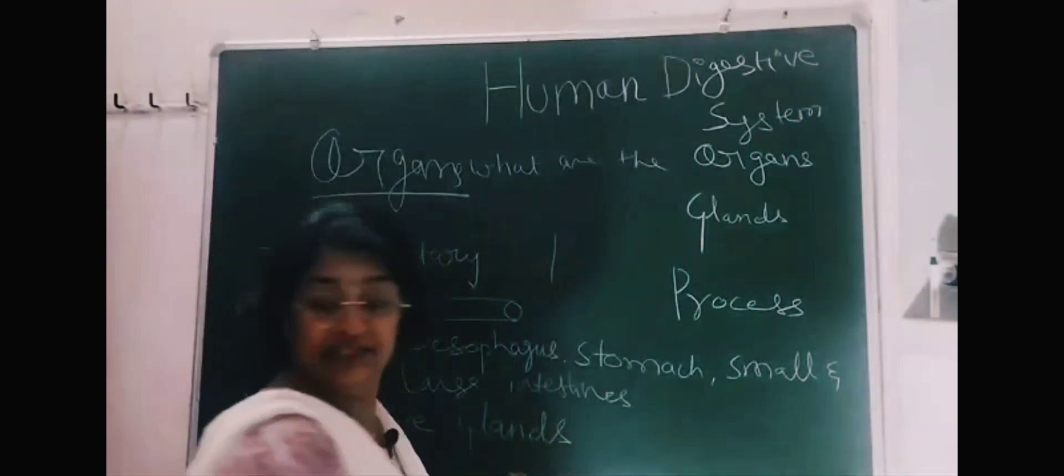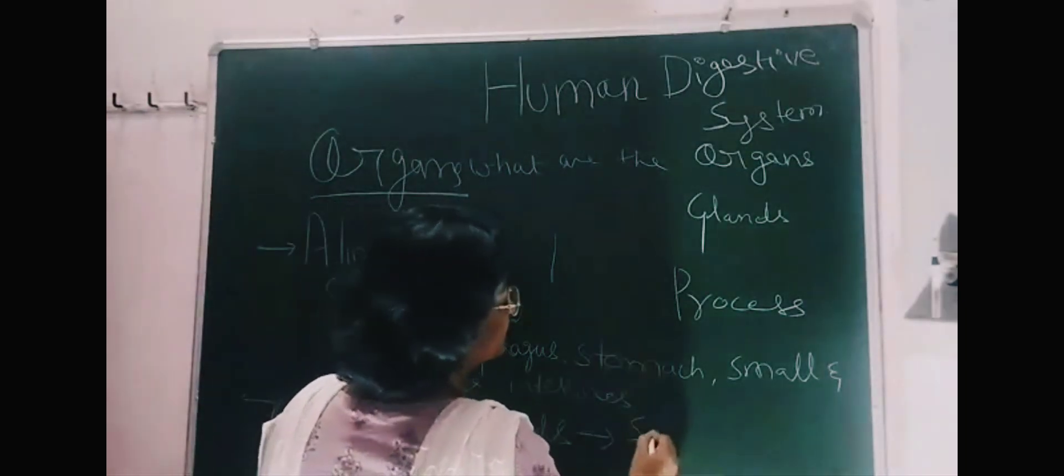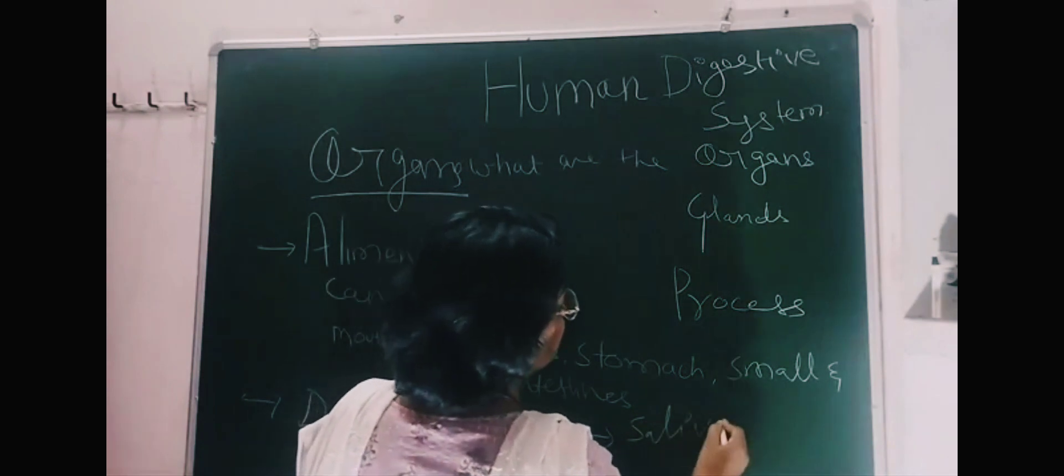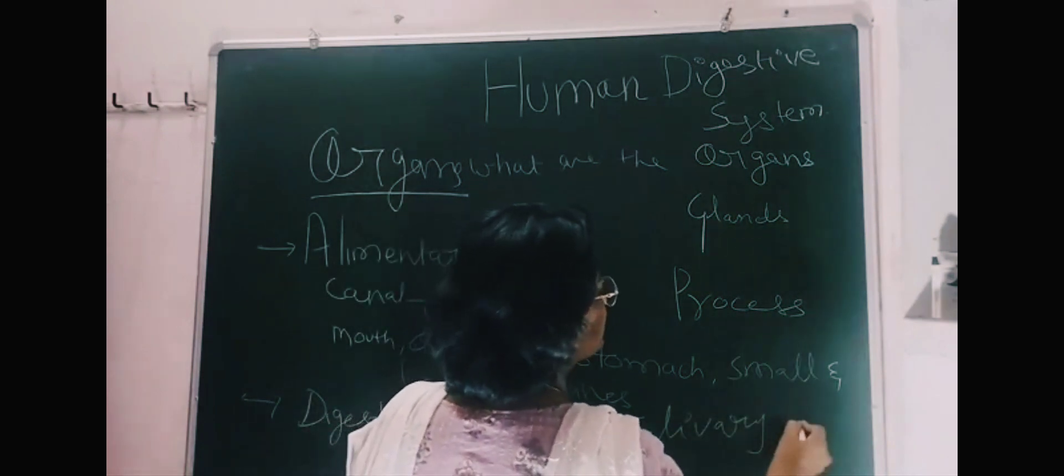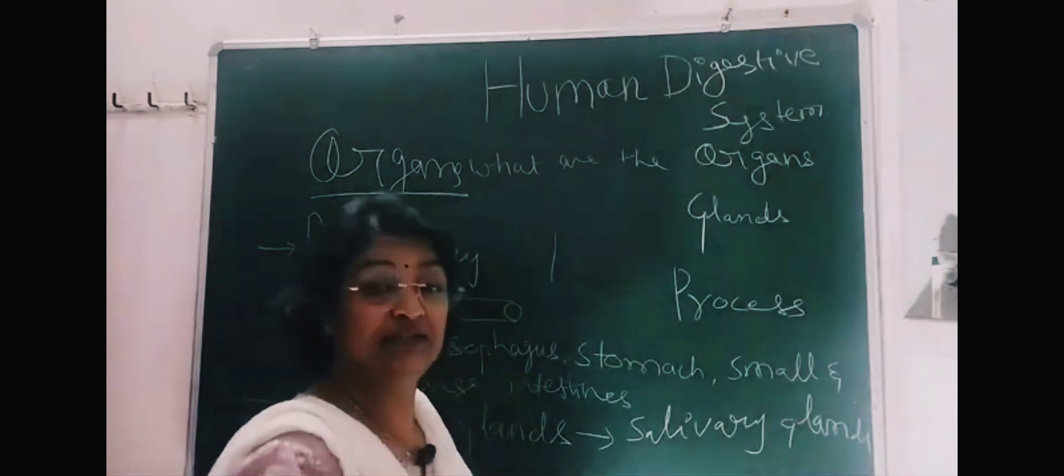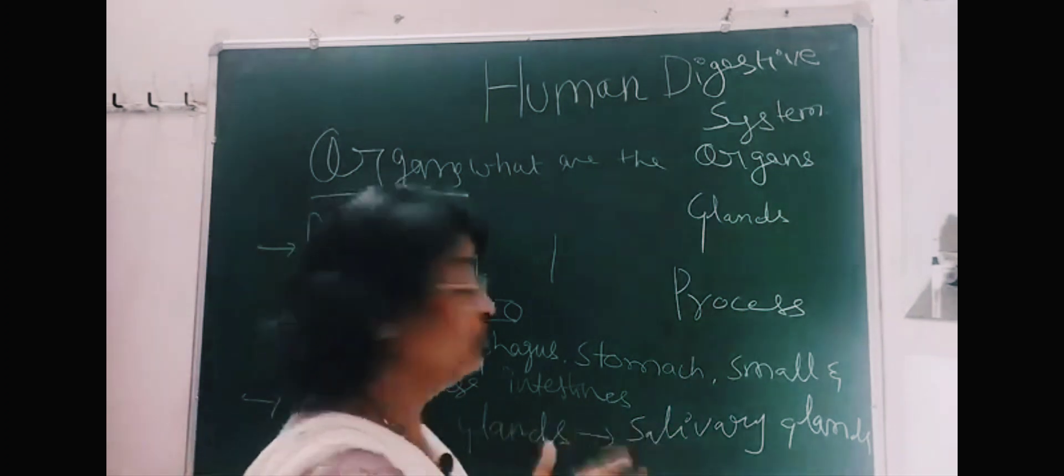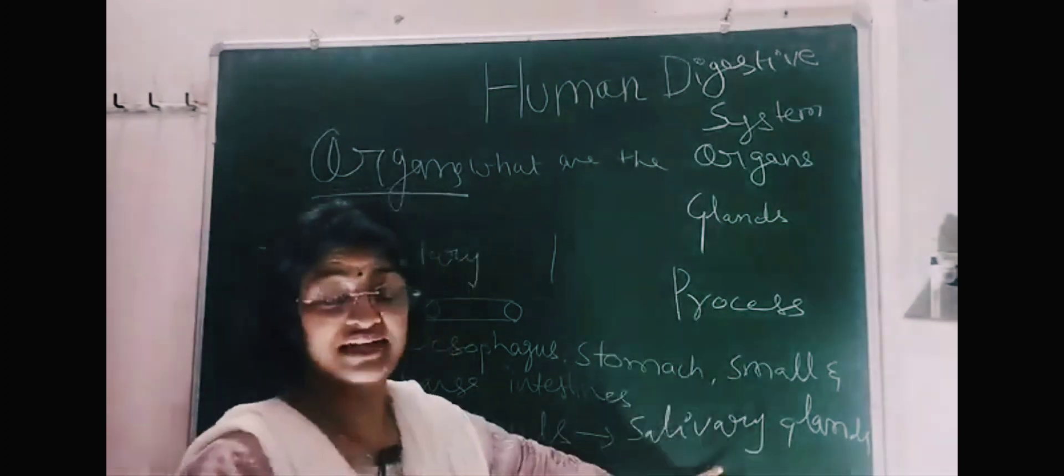Associated digestive glands are mainly salivary glands which secrete saliva. If you look at something like that in your mouth, it comes from the salivary glands.